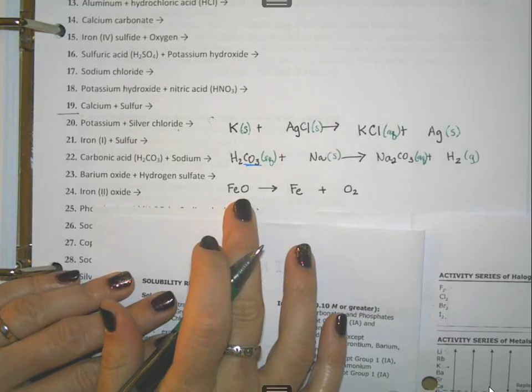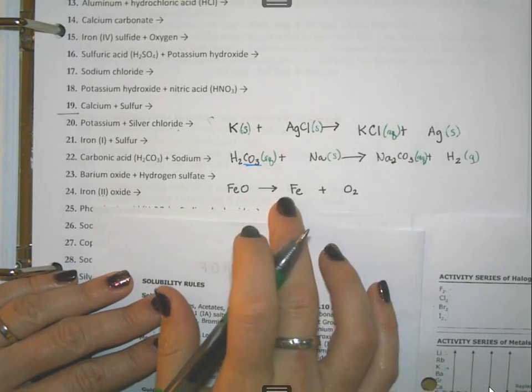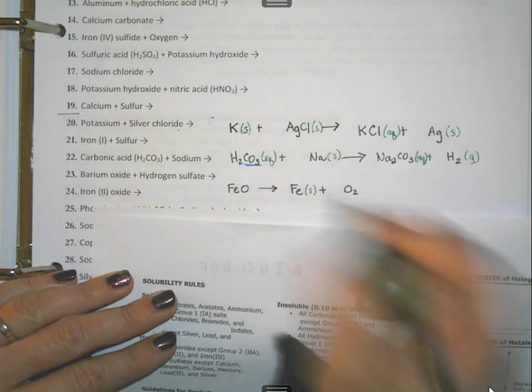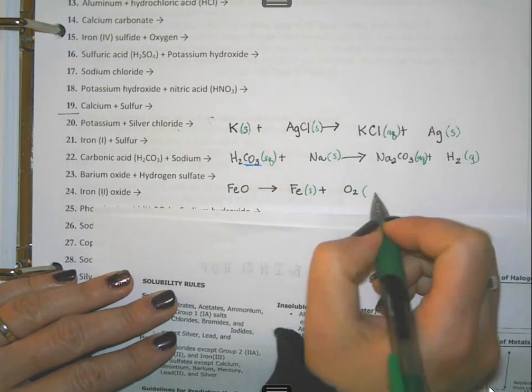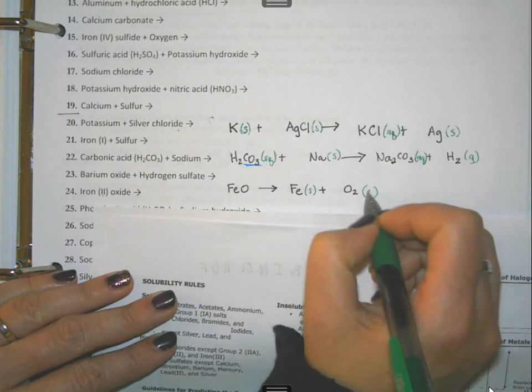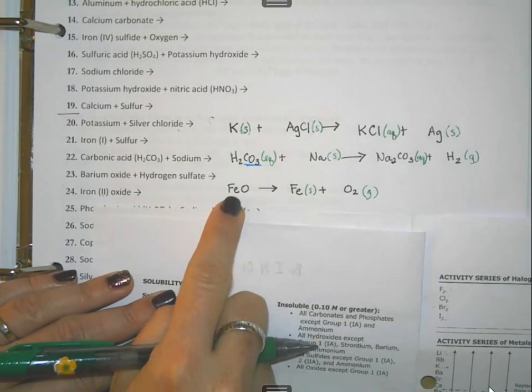Iron 2 oxide. Well, these two are two of the easiest. Iron is an element and it's not part of Brinkelhoff, so it's a solid. Oxygen, it is part of Brinkelhoff, and it's part of the Inkelhoff that's a gas, so we're going to put G for gas.